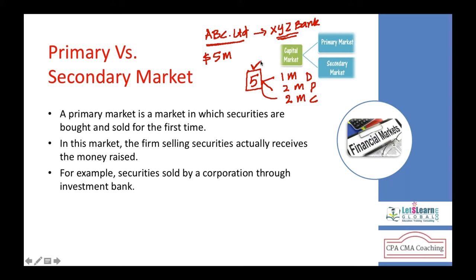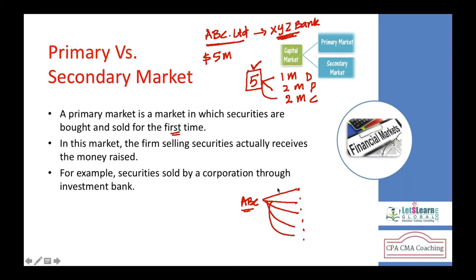When the securities of a particular company are sold for the first time in its lifetime to the general public and other corporates, it is called the primary market. This means shares are sold directly from the company to investors across the globe, with a media intermediary helping to transfer the shares.